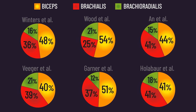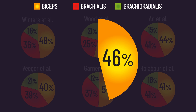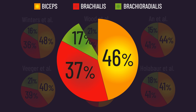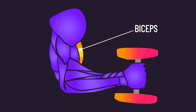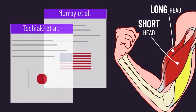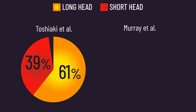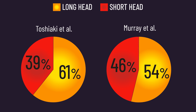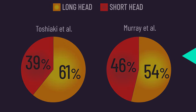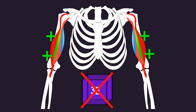Averaging out the six studies, we find the biceps makes up 46% of the elbow flexors, the brachialis 37%, and the brachioradialis 17%. Focusing on the biceps, two studies comparing long and short head contributions found the long head had a greater physiological cross-sectional area. Unfortunately, no research to my knowledge provides insight into how the volumes of supernumerary heads may compare.